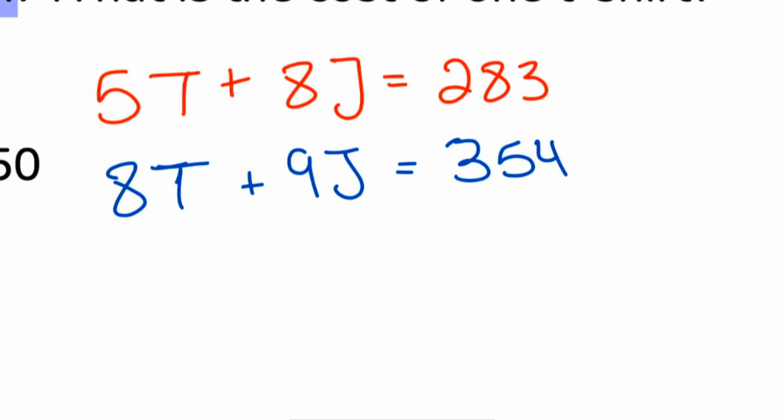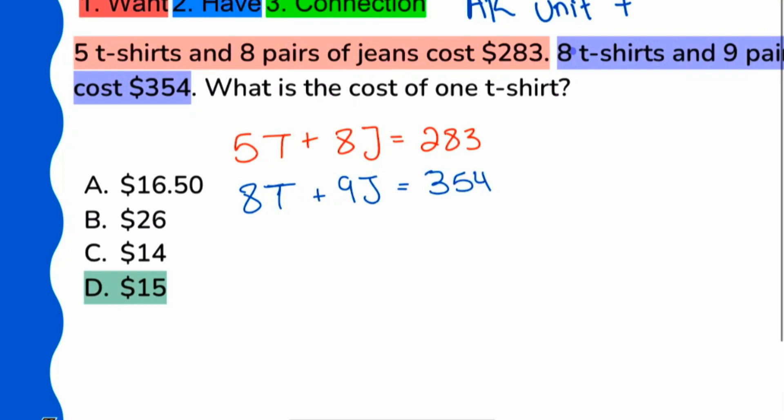And we have a decision to make because this question is telling us, what's the cost of one t-shirt? And that's represented by T. So if I'm looking at it that way, my recommendation would end up being, let's go ahead and eliminate the J so we can keep the T. That's one way to do it.